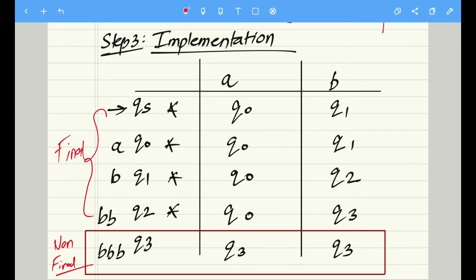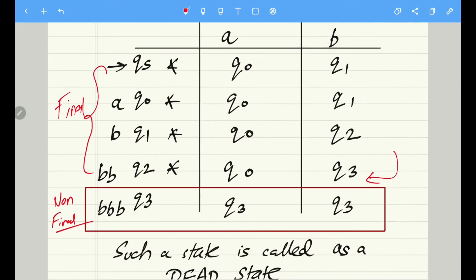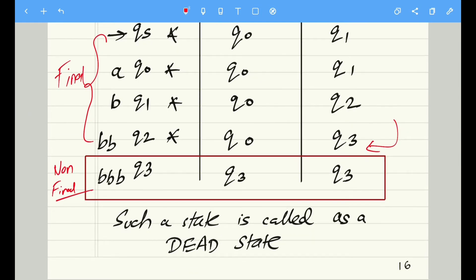So once we are in q2 and if we get one more b, then we will move to q3. Okay, clear. So as per the previous question, it is very similar. Once we are in q3, whatever be the inputs, either a or b, irrespective of that, that input remains in that particular state.